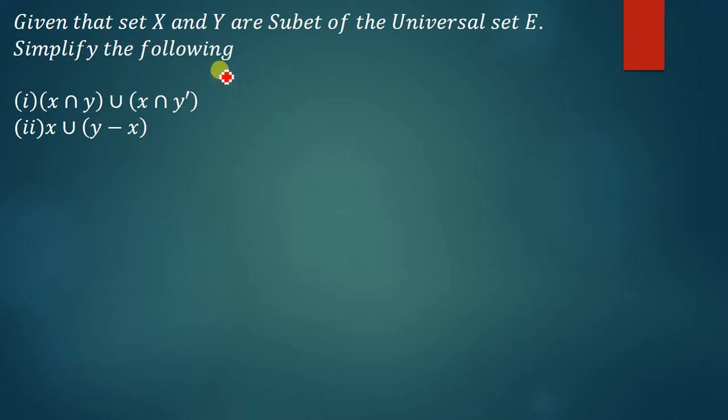This question says given that x and y are subsets of the universal set E, simplify the following sets. We're going to apply different rules of sets, different laws of sets to find the simplified versions of these sets.